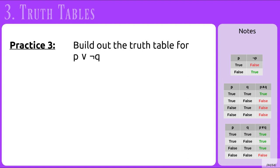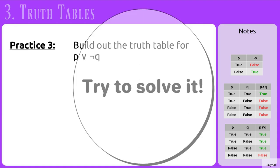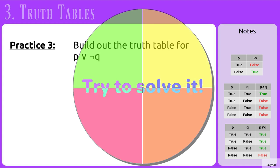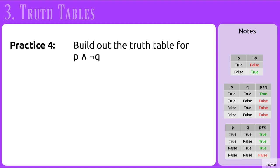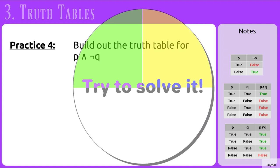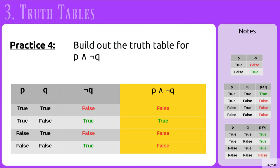Now it's your turn. Build out the truth table for P OR NOT Q. The result is true when both P and Q are true, or when P is true and Q is false, or when P is false and Q is false — and false only when P is false and Q is true. Next, build the truth table for P AND NOT Q. That result is false when both P and Q are true, false when both are false, false when P is false and Q is true, but true when P is true and Q is false.